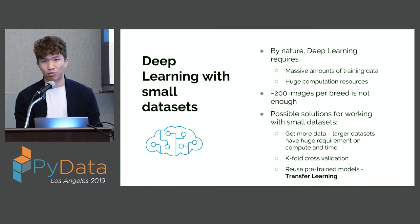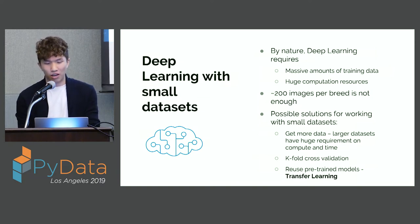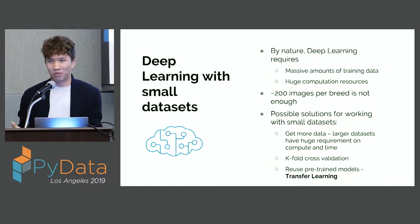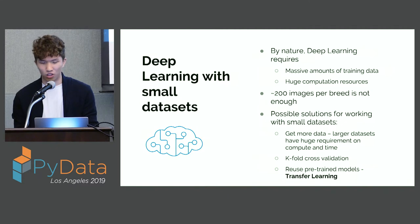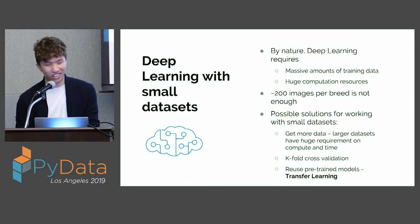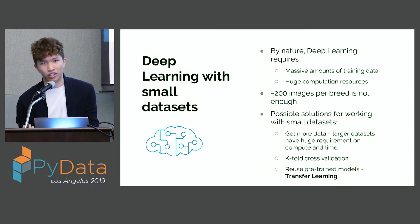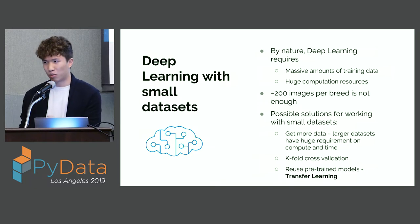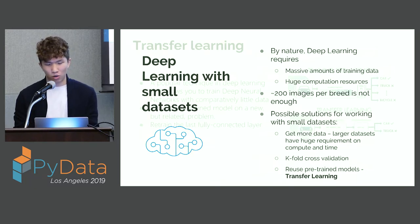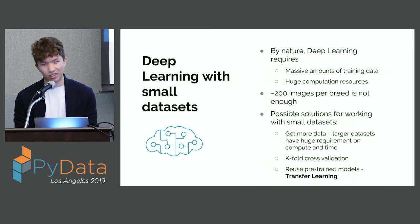There are some possible solutions for working with small datasets. The most obvious is to get more data, but going around campus taking pictures of people's pets isn't a good use of time. There's also k-fold cross-validation, but it's really complex. The approach we're going with is reusing pre-trained models through a technique called transfer learning — we take an existing model trained by PhD researchers on general image classification and tune it towards our specific needs. It's the easiest, requires no additional data, and is really, really fast.